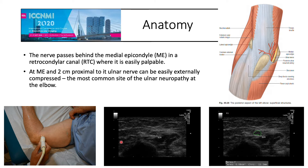The ulnar nerve passes behind the medial epicondyle in the retroepicondylar canal, where it is easily palpable at the medial epicondyle and 2 cm proximal to it. The ulnar nerve can be easily externally compressed here — this is the most common site of ulnar neuropathy at the elbow. We typically measure the cross-sectional area at 2 cm proximal to the medial epicondyle.